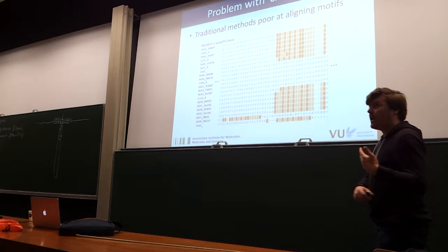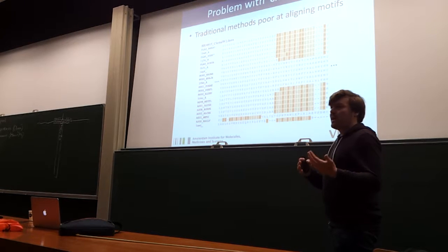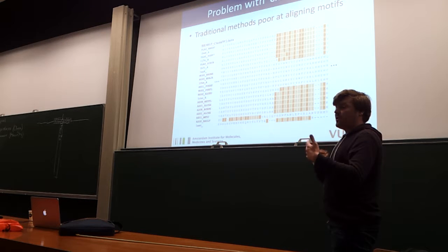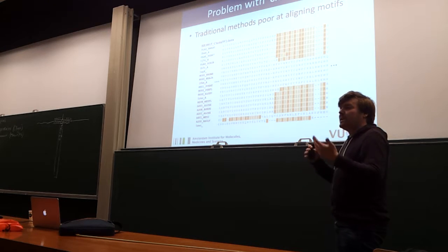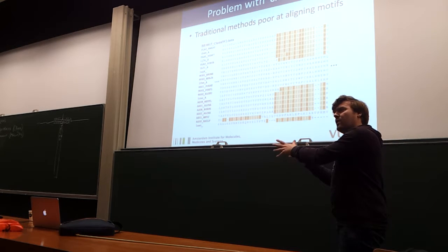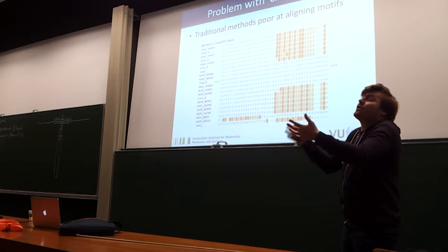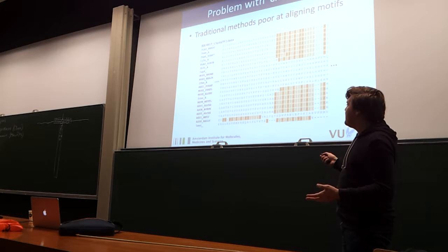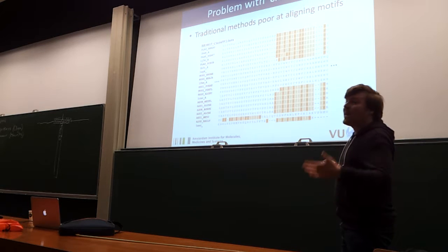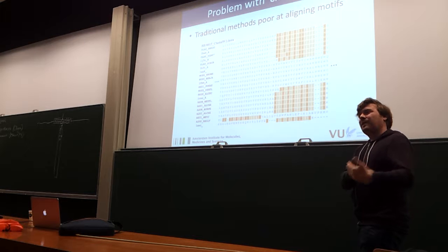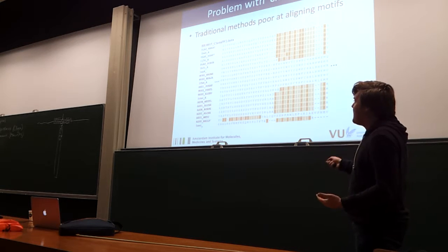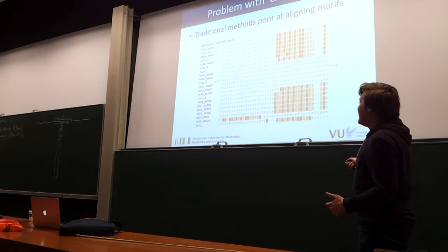There is a problem, though. A classic multiple sequence alignment algorithm weighs every position in the alignment the same. It doesn't really care whether a position has been annotated as matching a motif pattern, or whether it's just another symbol in the sequence. And the problem is that we would really like motif positions to be up-weighted in terms of importance for the alignment. This is a standard, very popular sequence alignment method, and as you can see, it kind of makes a mess of it.